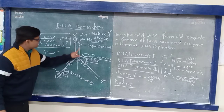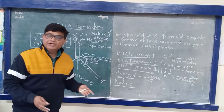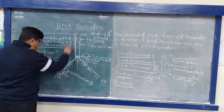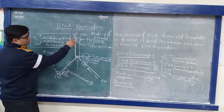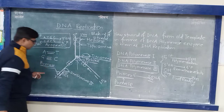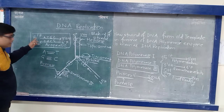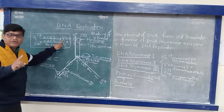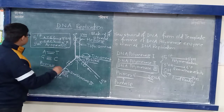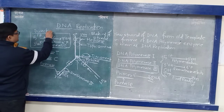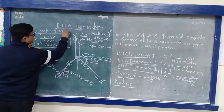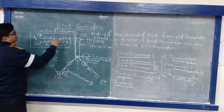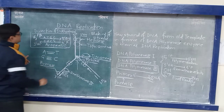These two strands act as a platform or template for making a new strand of DNA. There are two strands: one is 5' phosphate to 3' OH, and the other is 3' OH to 5' phosphate. So the direction of DNA synthesis occurs in the 5' phosphate to 3' OH direction.